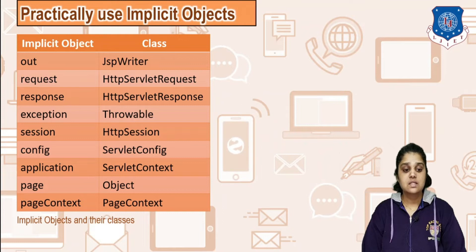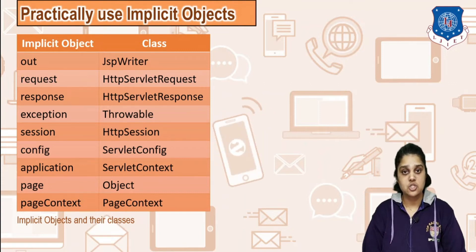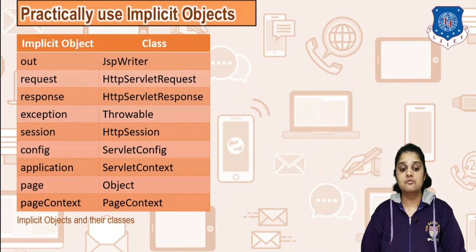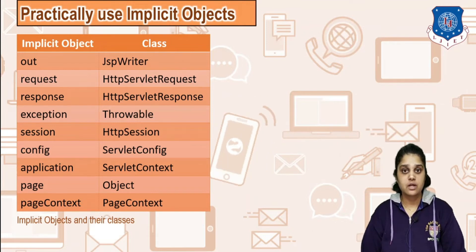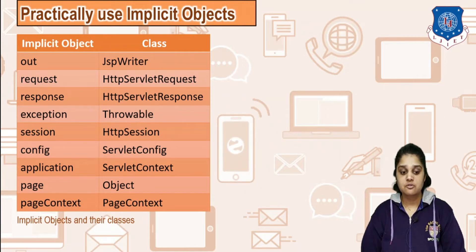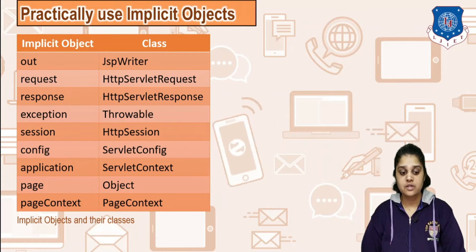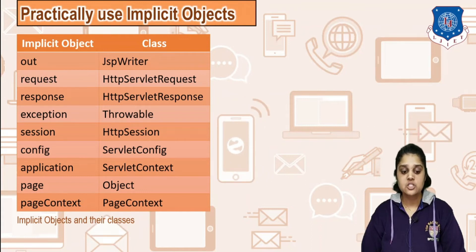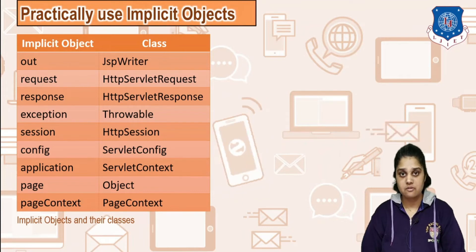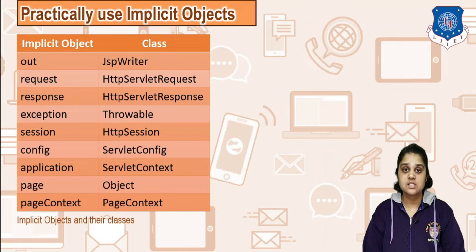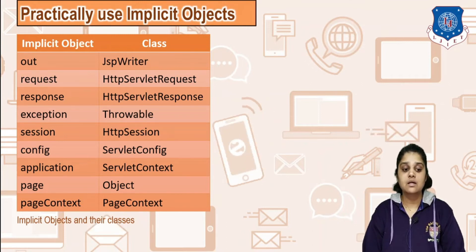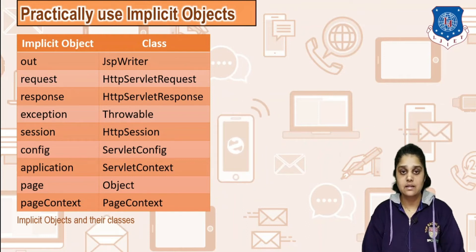Let us see which class or interface each implicit object belongs to. The 'out' object is of the class JSPWriter. 'request' is of interface HttpServletRequest. 'response' is of HttpServletResponse. 'exception' is of the Throwable class. 'session' is of HttpSession interface. 'config' is of ServletConfig interface. 'application' is of ServletContext interface. 'page' is of the Object class, and 'pageContext' is of the PageContext class itself.